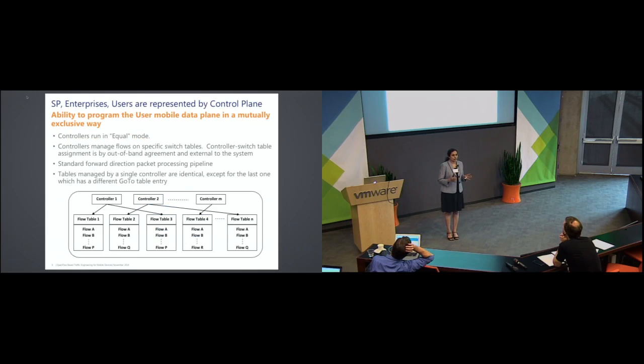Now the switch is already there on the data plane. Now we need to program it. How do we program it? Controllers. So I used controllers representing service provider, enterprise, and users. Like three controllers, and then represented as control plane. And they run in equal mode. These controllers manage the flows, flow tables, and they are predefined by out of band agreement. And they also follow the standard pipeline processing.